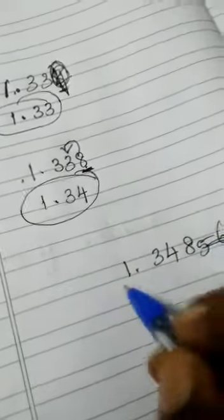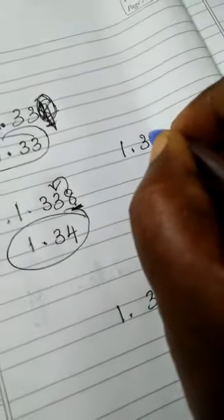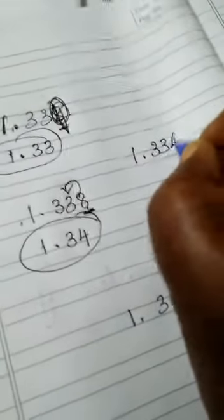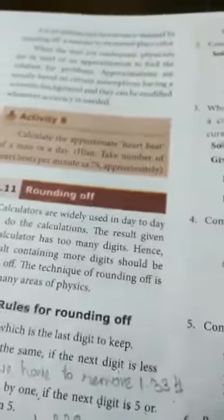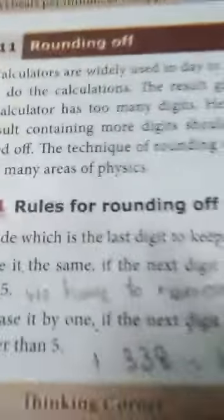For example, 1.334. First read the rules first. Rules of rounding off. What are the rules of rounding off?